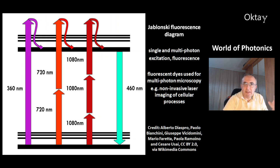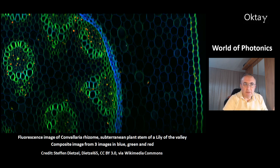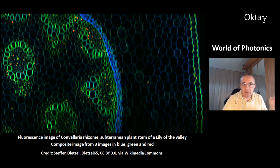This is the Jablonski diagram of fluorescence. It shows single and multi-photon excitation: here is a single photon, and here are multi-photon excitations. When the electrons relax to a lower energy level, fluorescence light is emitted. Fluorescent dyes are used for multi-photon microscopy, giving the opportunity for non-invasive laser imaging of cellular processes. This is a fluorescence image of a convallaria rhizome — a subterranean plant stem of a lily of the valley — a composite of three images in blue, green, and red.